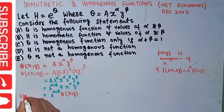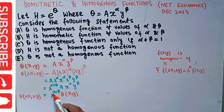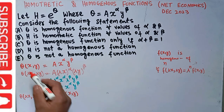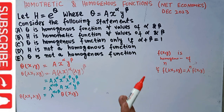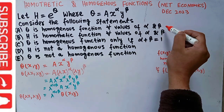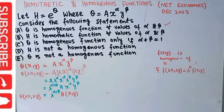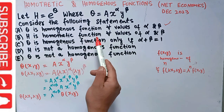When both x and y were increased by factor λ, we got λ^(α+β) times the original function. So we can say that q is a homogeneous function of degree α+β. Since we are given no restrictions on α and β, this first statement is correct.